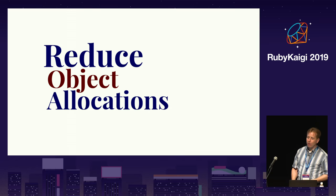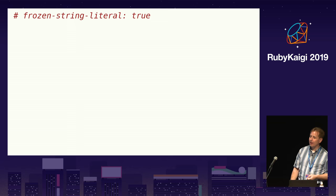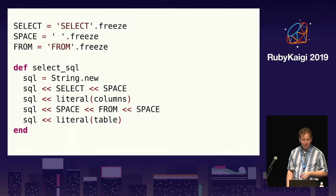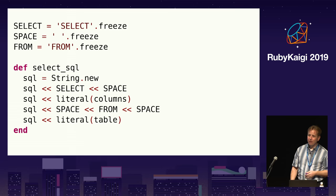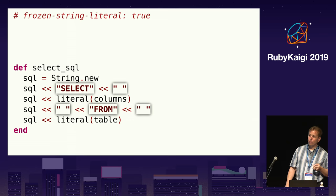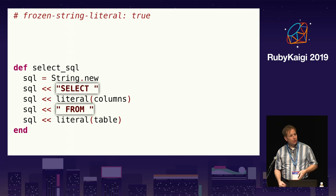Both Sequel and Roda attempt to reduce object allocations, and string allocations are probably the easiest to reduce — you just need to use frozen string literals. Both Sequel and Roda have used frozen string literals since shortly after they were introduced in Ruby 2.3. Frozen string literals didn't improve performance much when I added them to Sequel because for years before they were introduced, I had stored all strings used to generate SQL in frozen constants. After Ruby 2.3 was in wide use, I removed the constants and inlined the strings, which improved SQL building by a few percent, made the code easier to read, and made it easier to see which strings could be combined, further increasing SQL building performance.